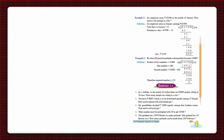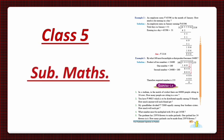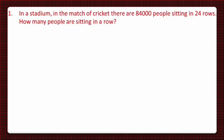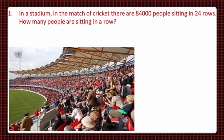Hello dear students, today we'll do question number one and three of exercise 2.8 of class fifth maths world. Question number one: in a stadium, in a cricket match, there are 84,000 people sitting in 24 rows — how many people are sitting in a row?